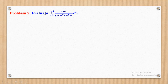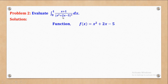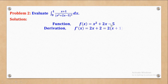Problem two says: evaluate the integral from 0 to 1 of (x + 1) over (x² + 2x − 5) raised to the power 3, with respect to x. Our function f(x) is the expression inside the bracket with the power, which is the denominator: f(x) = x² + 2x − 5. Differentiating gives 2x + 1, and factorizing out 2 gives 2(x + 1). Comparing, the derivative of f(x) is somewhat similar to (x + 1) in the numerator — the difference is only in the constants.